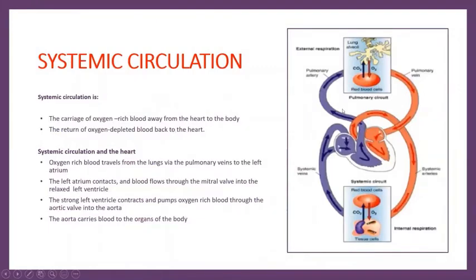Next is systemic circulation. As we studied in the cardiac cycle, the heart carries oxygen-rich blood as well as deoxygenated blood. Systemic circulation refers to the carriage of oxygen-rich blood away from the heart to the body through the aorta, and the return of oxygen-depleted blood back to the heart. Both types of flow together constitute systemic circulation.